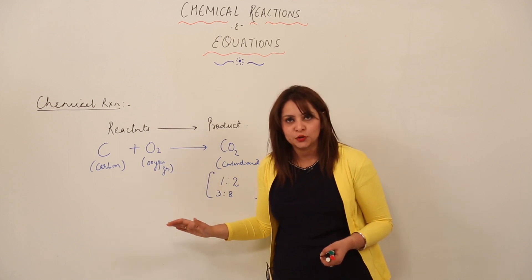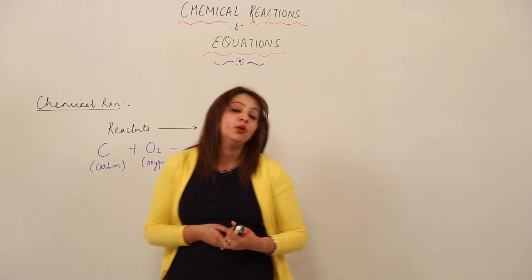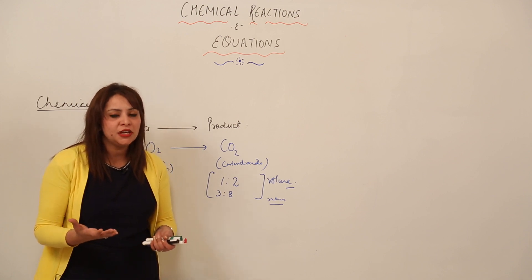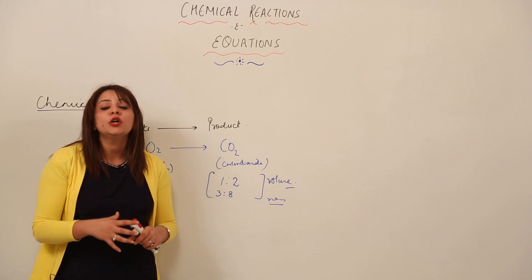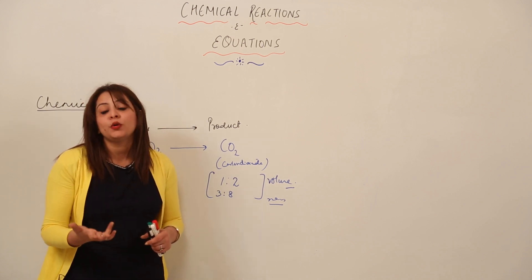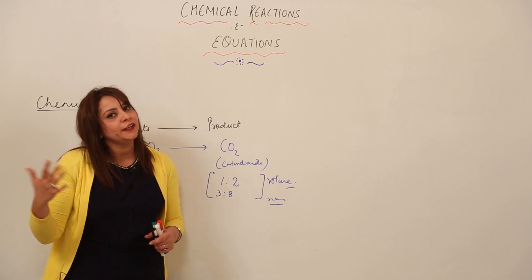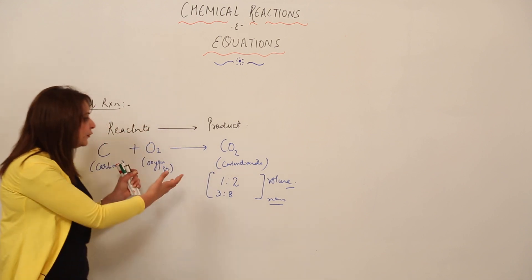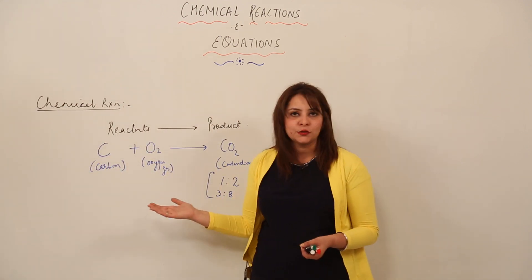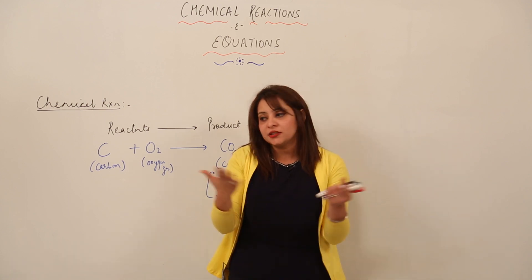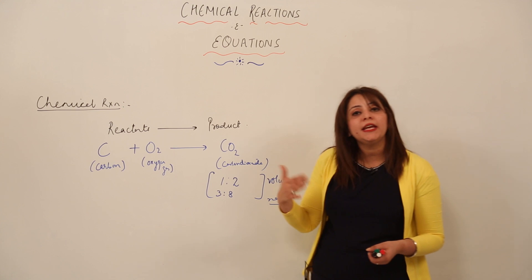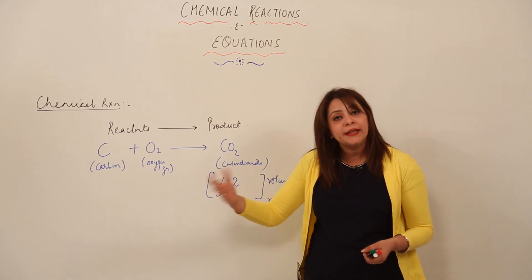The product can have its own properties — it is not compulsory that it shows all properties like those of the reactants. So a chemical reaction is a process in which reactants undergo a chemical change — old bonds are broken and new bonds are formed — and as a result we get a new substance called the product, which can be one or more than one.